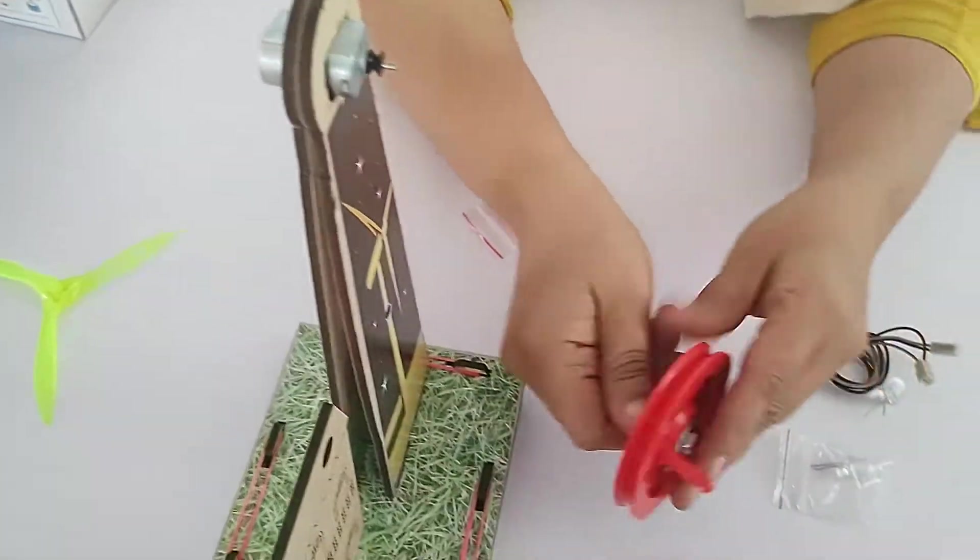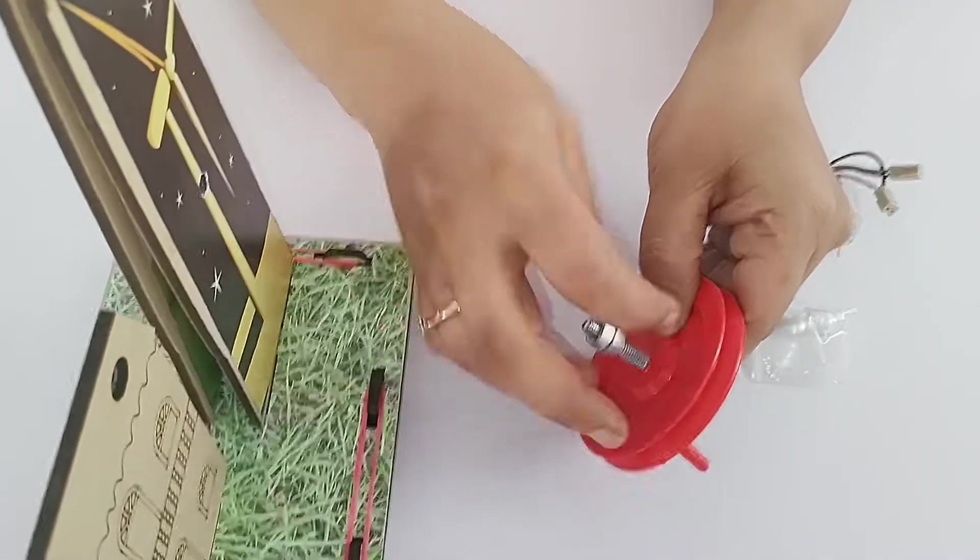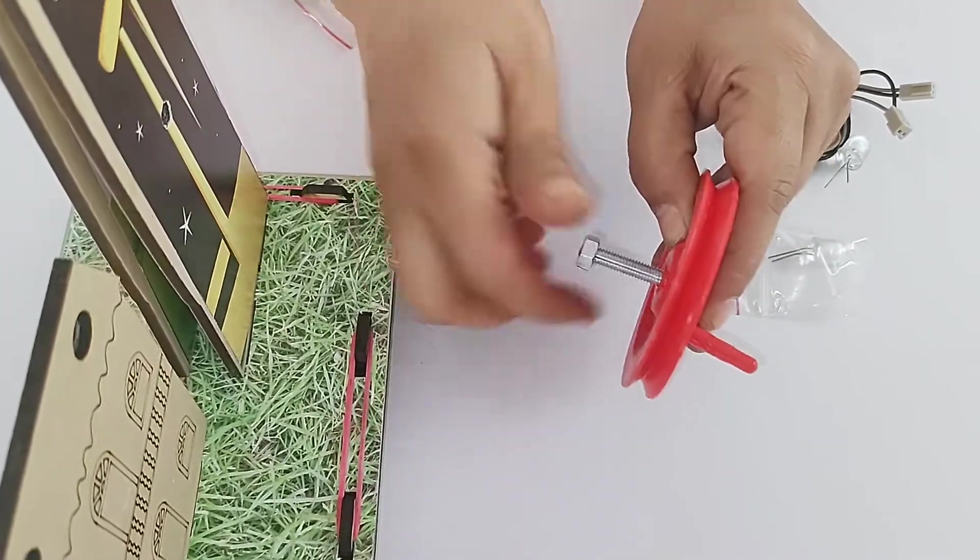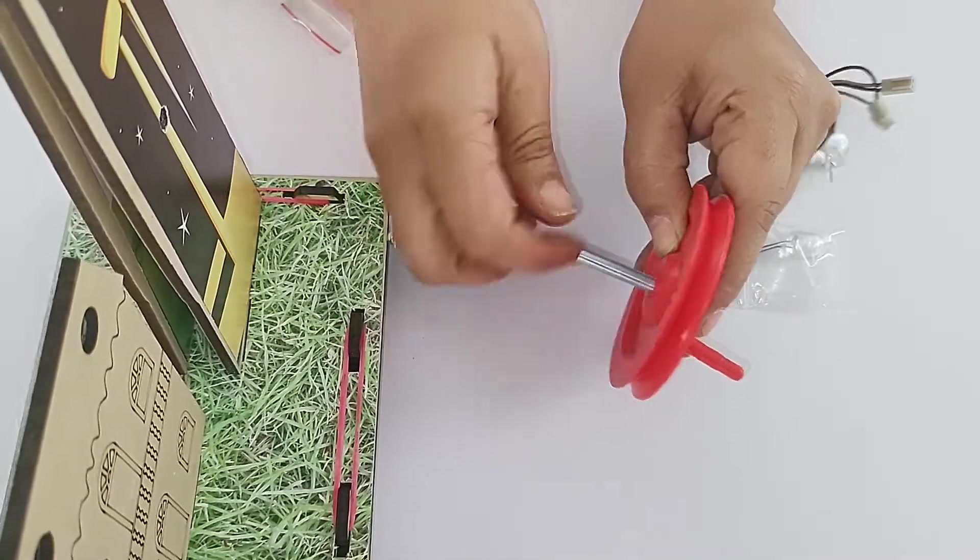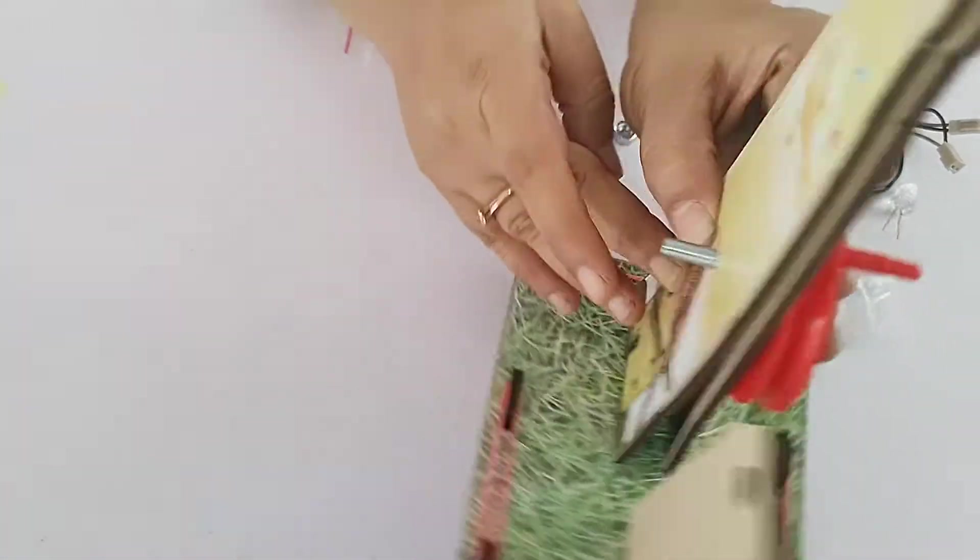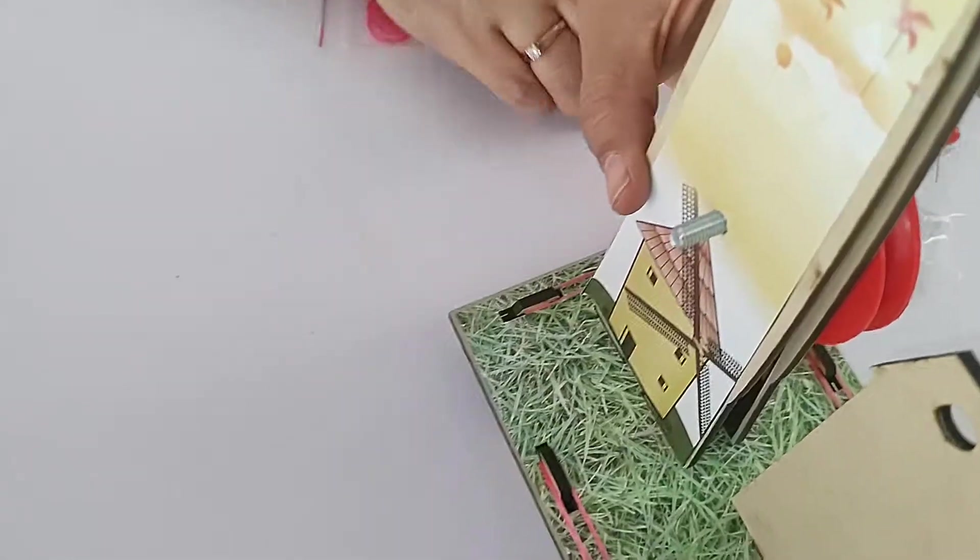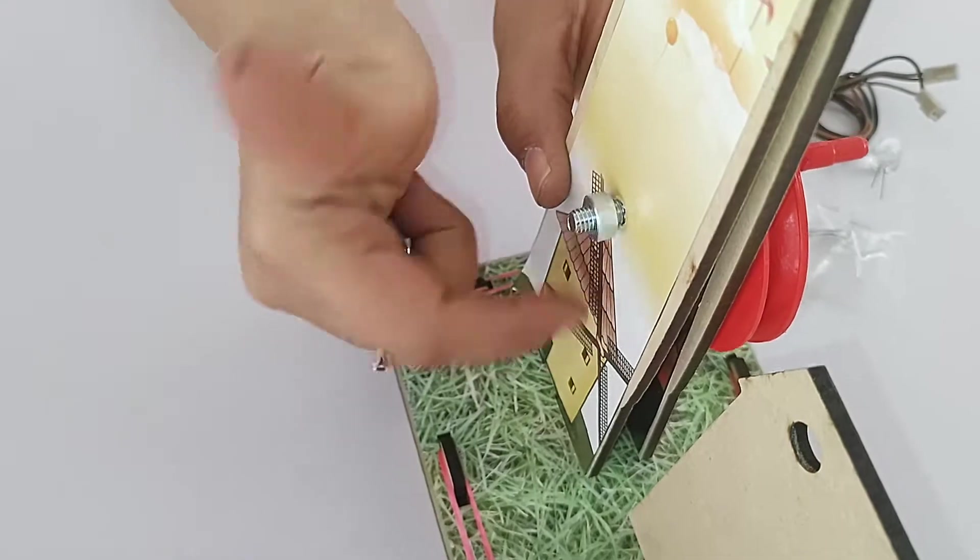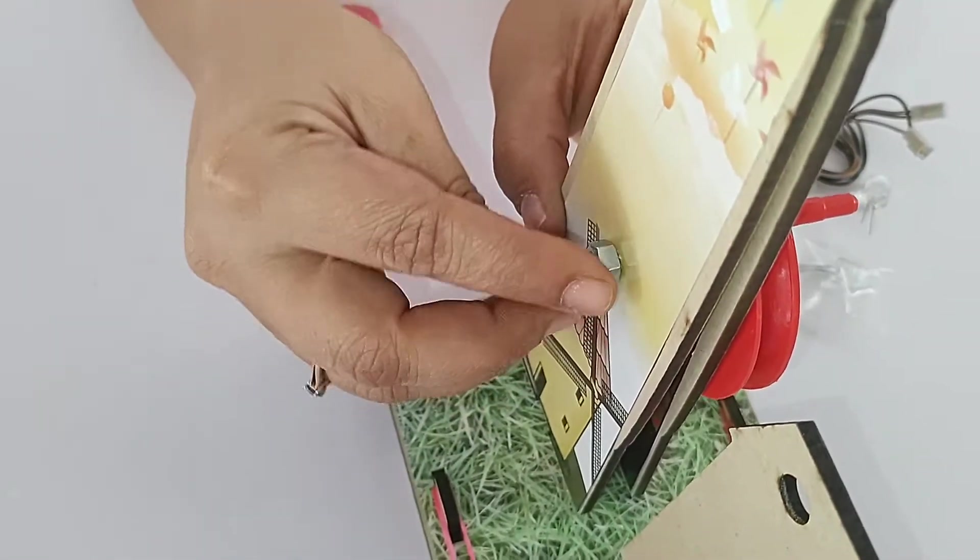You're supposed to use this pulley with handle which is having two nuts and one bolt. So you just, there is one hole provided on the tower, just insert it here. Right, fix it.